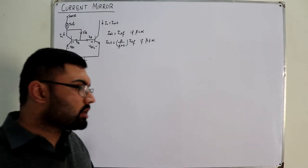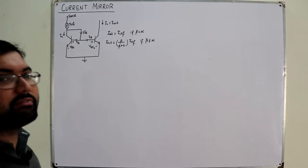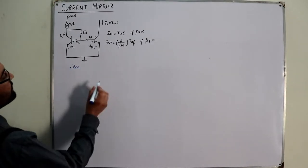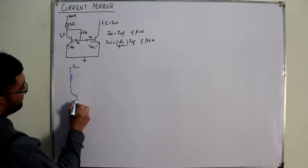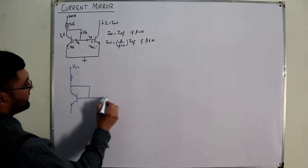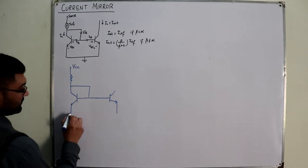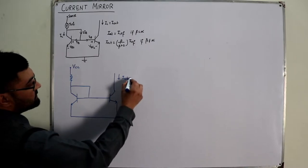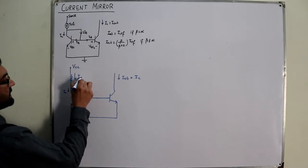Now let's look at the major biasing possibilities for this circuit, or how an exam question might be framed. The first possibility: a VCC positive supply with a resistor through which the reference current flows, connected to this arrangement. The output current I_output is the collector current I_C, and the current through the resistor is the reference current I_reference.